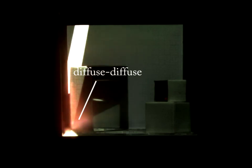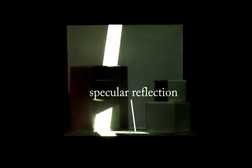By sweeping a beam of light across this box, we can see that we can capture diffuse-diffuse inter-reflections and reflections off specular surfaces.